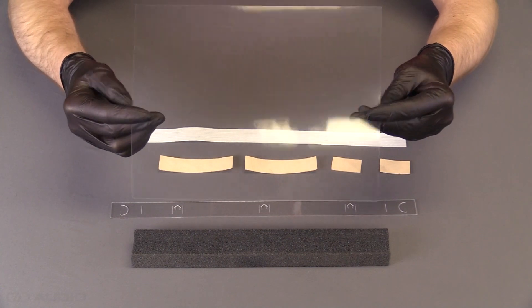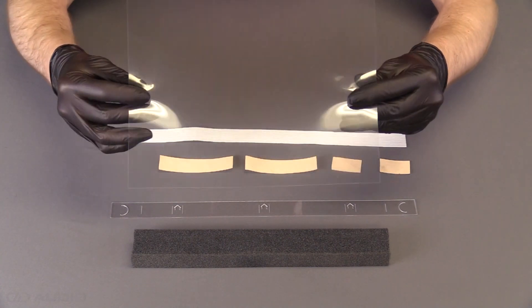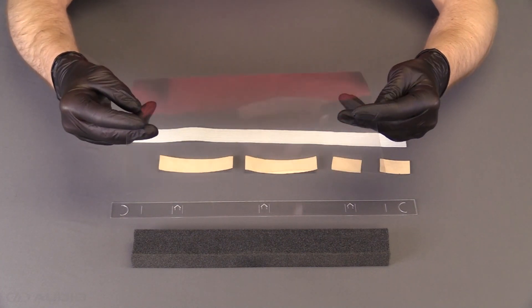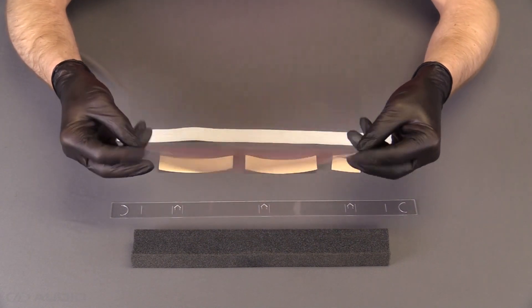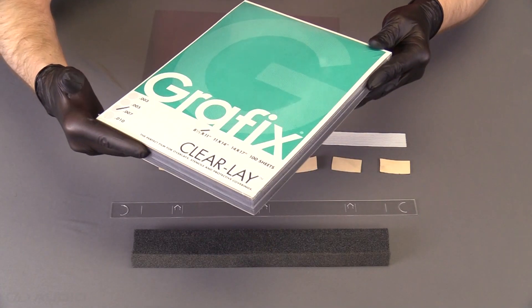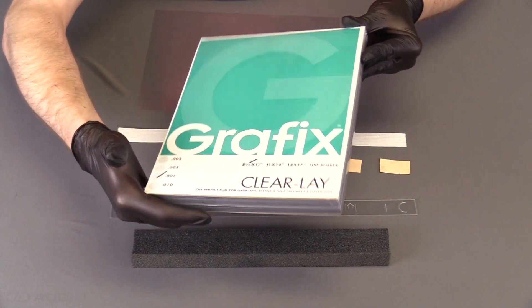Starting off we have a piece of mylar at seven thousandths of an inch thick. It's like overhead projector material. This stuff if you can see it through the glare there.